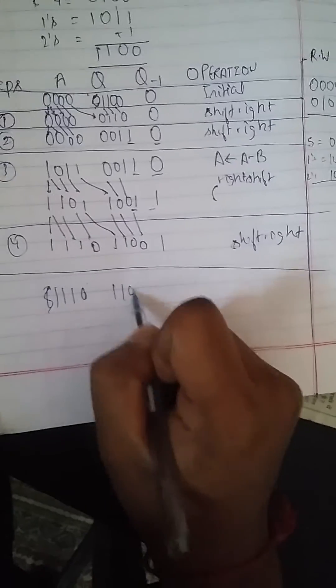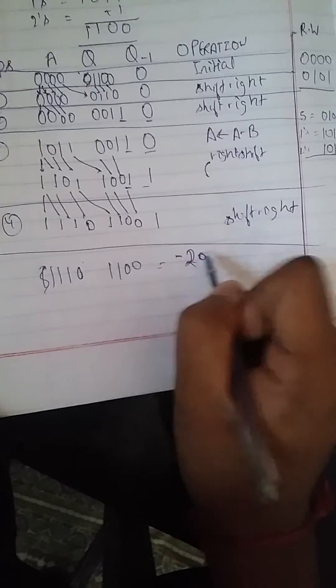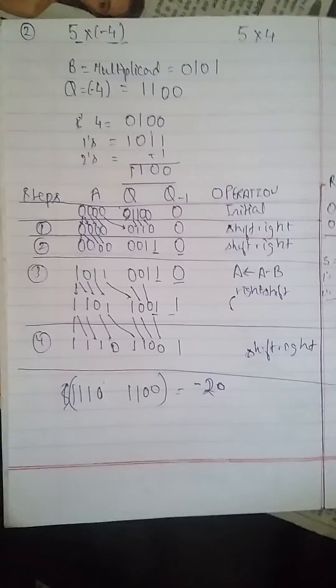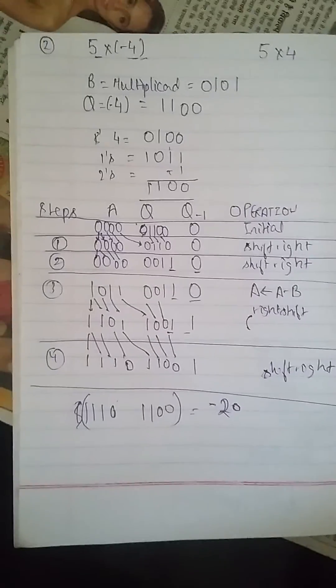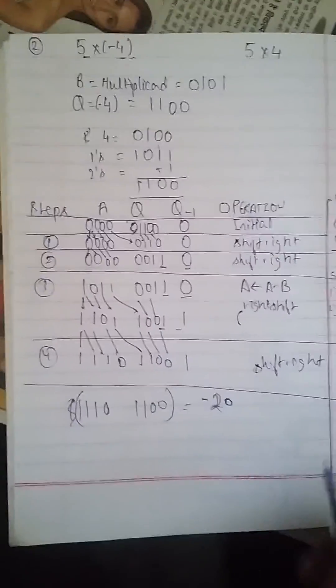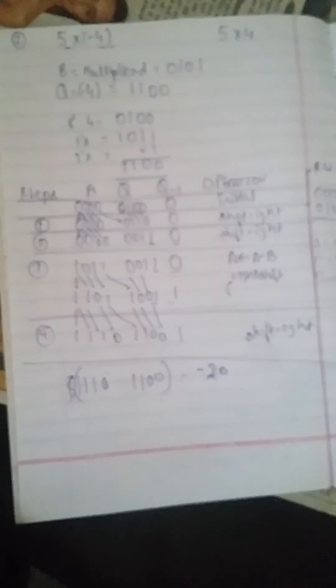The final result is 11100, which equals minus 20. That's the answer. I think you would be able to grasp the main concept of Booth's algorithm. I have uploaded lectures on both signed and unsigned bits, which should be more helpful for you. Thank you.